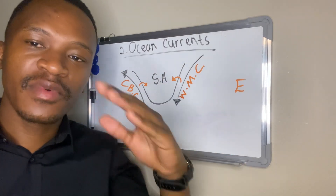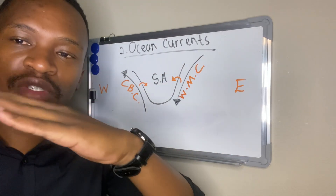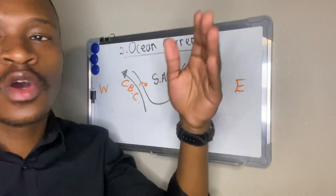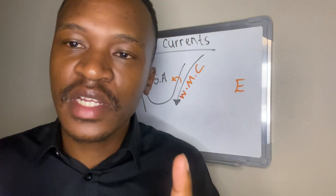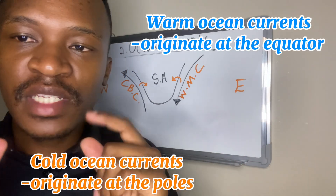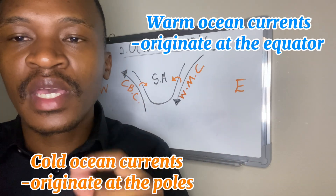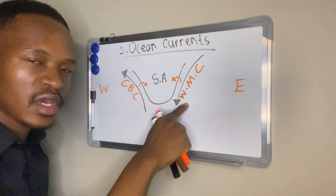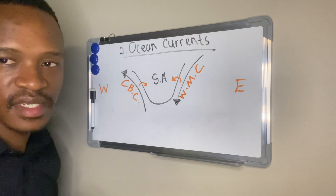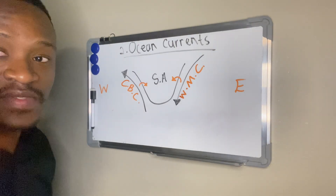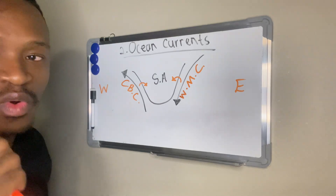Our oceans are moving, and this movement of ocean water is known as ocean currents. We have two types of ocean currents: warm ocean currents and cold ocean currents. This depends on where they come from. If the ocean current comes from the equator, it will be a warm ocean current, because our equator receives direct insolation and it is warm.